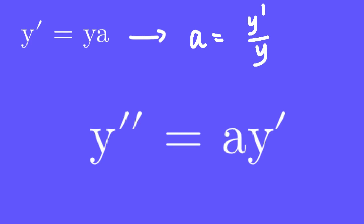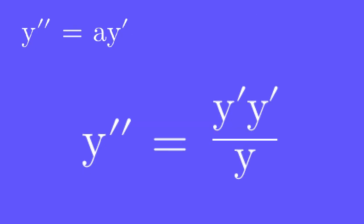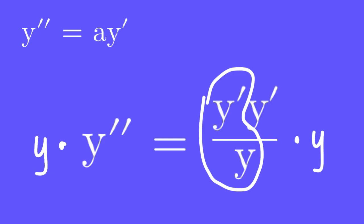Now the arbitrary constant a in the new equation can be replaced by y prime over y. This equation replaces a by y prime over y. Multiply both sides by y to avoid a denominator in the final answer.